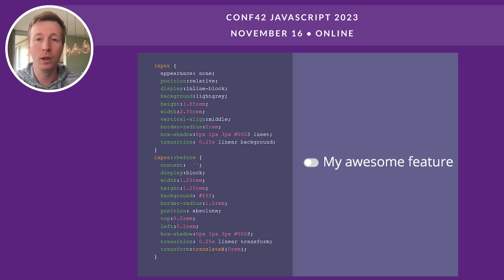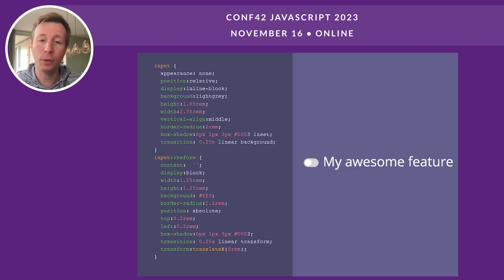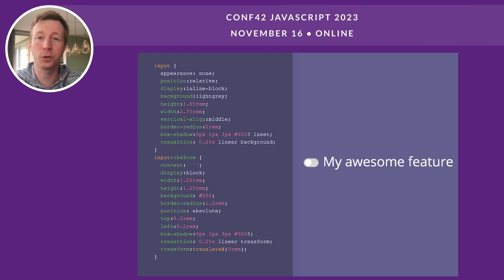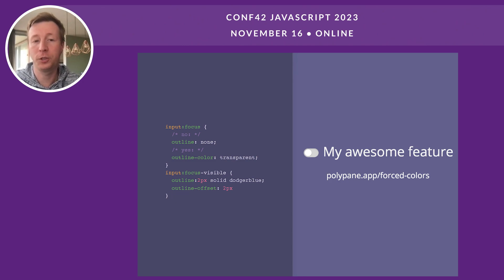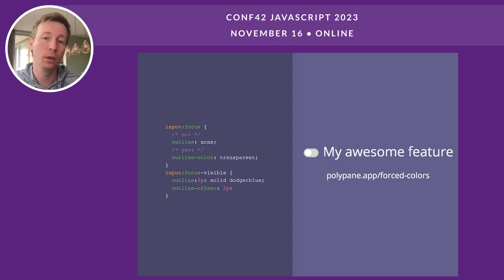We use the regular input as the background — the gray part of the toggle — and the before pseudo-element to add the nib inside the toggle. Everything is still functional so clicking toggles the checkbox. To make the change visible to the user, we use the checked pseudo-class. When the input is checked, the pseudo-class resolves to true and we can give the input a green background and move the nib to the right to indicate the toggle is on.